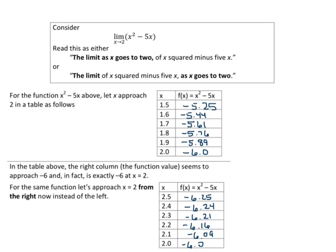So let's look at this for a second. We are approaching 2 and we're starting at about 1.5. Notice how we're coming in from the left. We're going from 1.5 to 2, and notice that it seems to appear to get very close to the value of negative 6. So in the table right here at the top, the right column, the function value seems to approach negative 6, and in fact it is exactly negative 6 at the value of x equals 2.